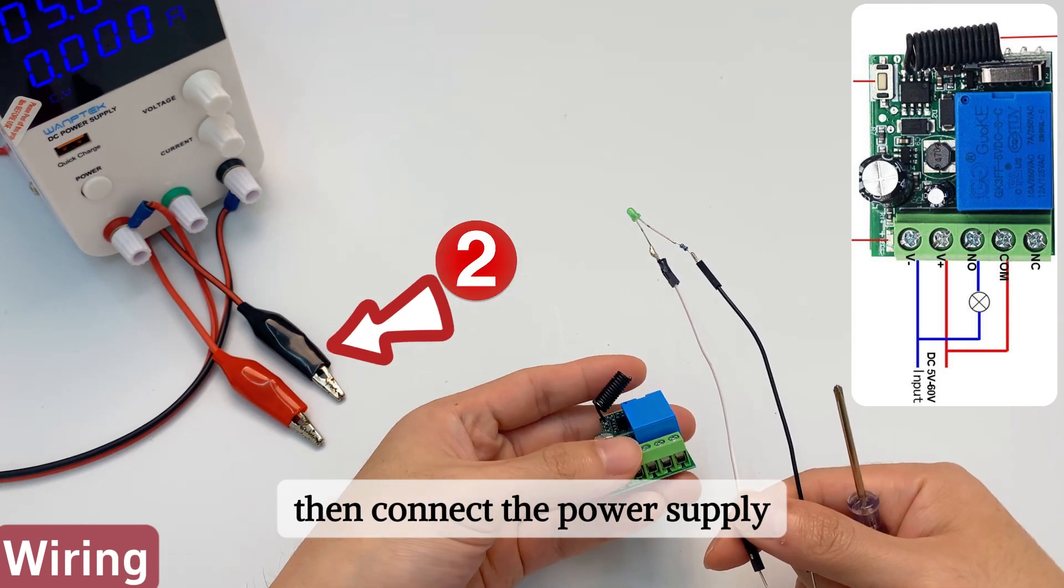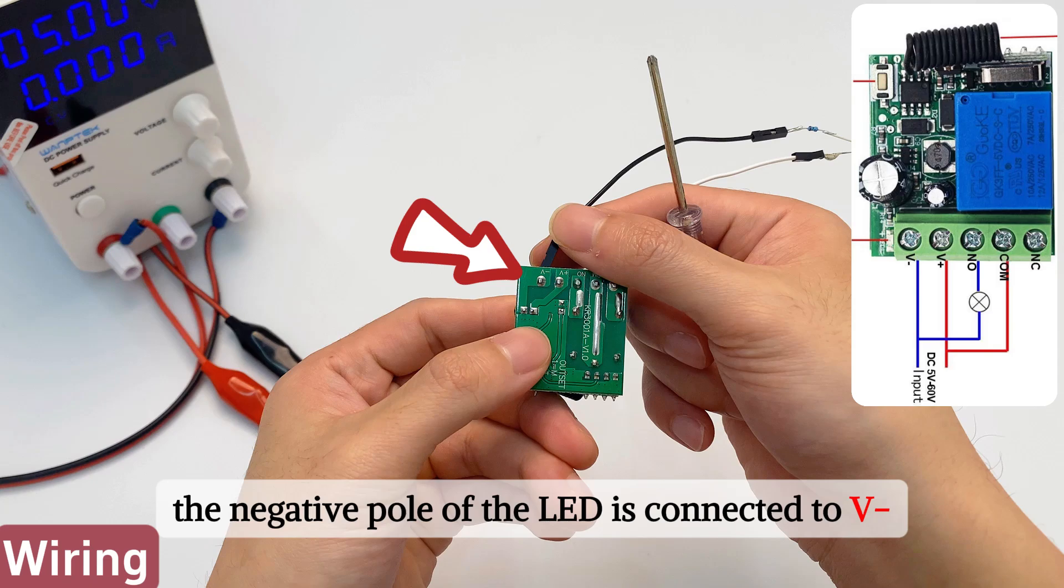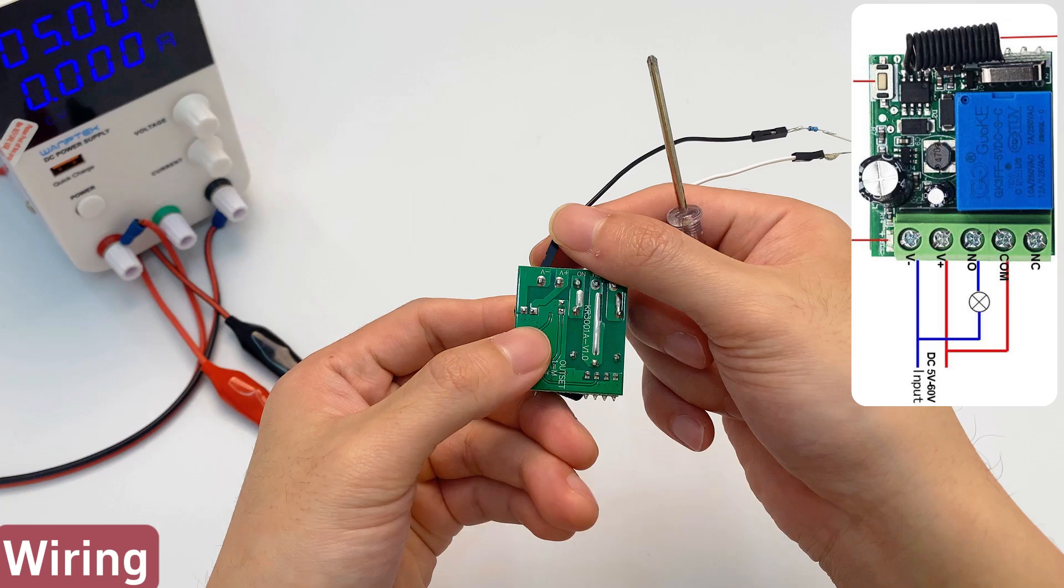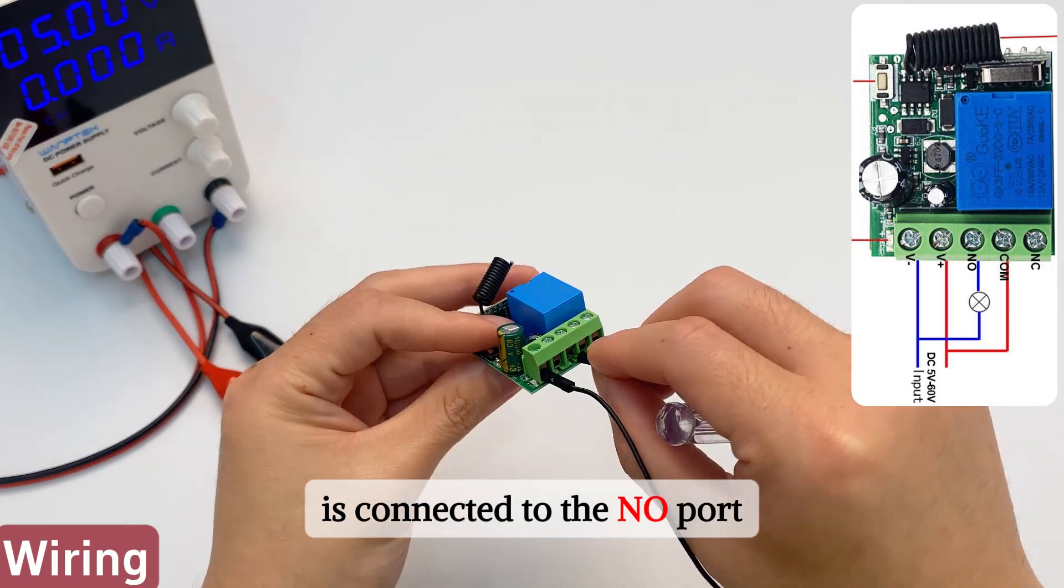The negative pole of the LED is connected to V minus. The positive pole of the LED is connected to the NO port.